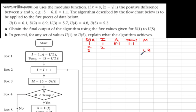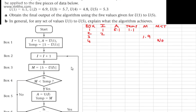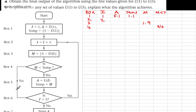We move on to box four and make a decision: is M less than temp? M is 1.9 and temp is 1.1, so the answer is no. Following the no route takes us to box six instead of box five. At box six, we ask: is I less than five? I is currently two, so yes. Since I is less than five, we follow yes and come back up to box two.